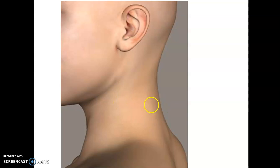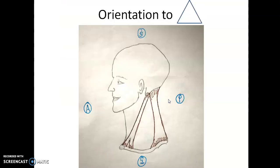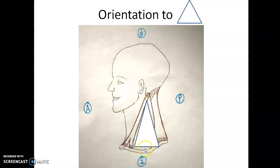The neck is a cylindrical structure in the body, but on a side profile it is quadrangular. On the lateral aspect, this quadrangular neck is divided into two triangles: a posterior triangle with apex pointing up and base directed towards the clavicle, and an anterior triangle with base directed towards the mandible and apex towards the sternum.